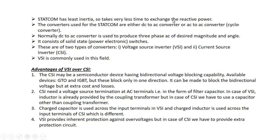STATCOM takes less time to exchange power. The converters used for STATCOM are either DC to AC converters or AC to AC converters. If DC to AC converters are used, they are usually inverters. AC to AC converters can be AC voltage converters, AC voltage regulators, or cyclo-converters. Normally a DC to AC converter — that is, the inverter — is used to produce three-phase AC of desired magnitude and angle.